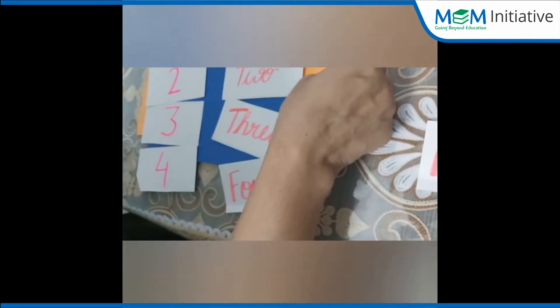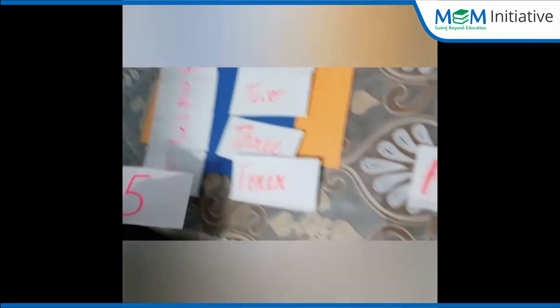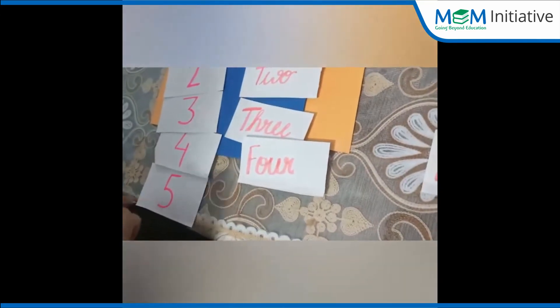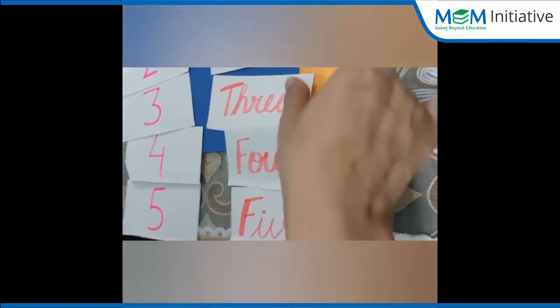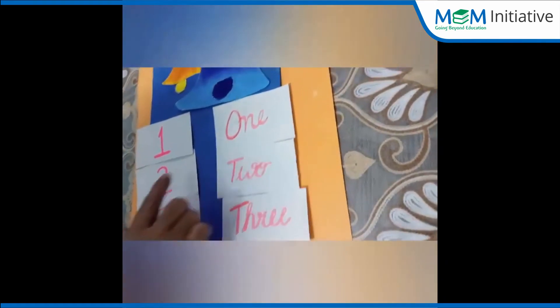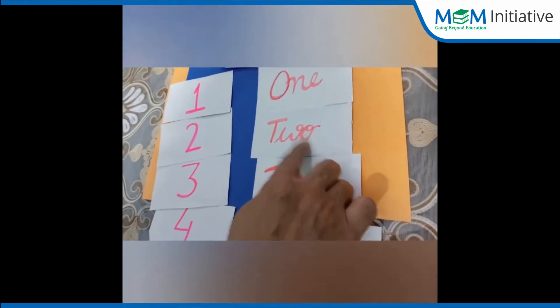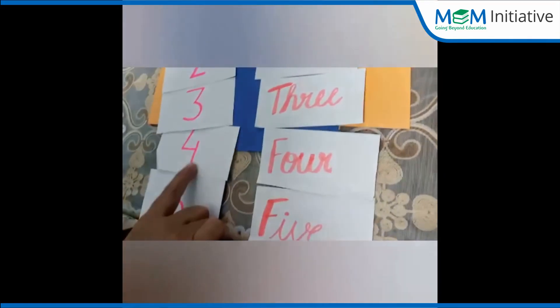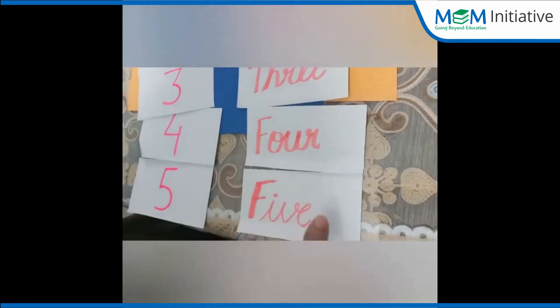Now let me find out where is number 5. Here it is, number 5. And where is the number name 5? Yes, here it is, number name 5. F-I-V-E, 5. Now see, ma'am has matched number 1 with number name 1, number 2 with number name 2, number 3 with number name 3, number 4 with number name 4, number 5 with number name 5.